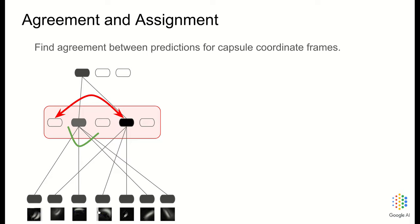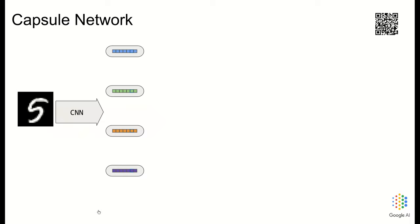This will be in what follows. I will be discussing three approaches to finding agreements and assignments between capsules. This will be using dot products, expectation maximization, and mixture models. But before that, I will give a general architecture.